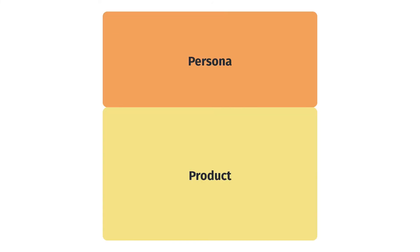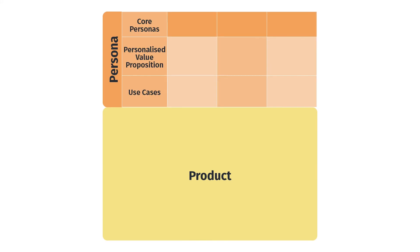Now we move on to our personas. We start by identifying our core personas — specific groups of people that we want to be promoting to. Then our personalized value proposition, which is the unique benefits of our brand or product for this persona. And then the user cases — the situations in which the persona uses your product or service. For us, our core personas are school leavers, graduates or current tertiary students, or mature students, which would be students who have studied before or may be studying for the first time at a later stage in life.